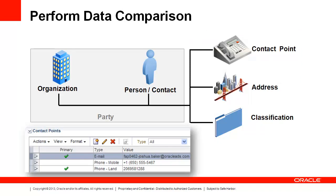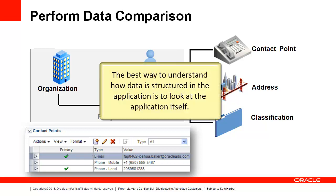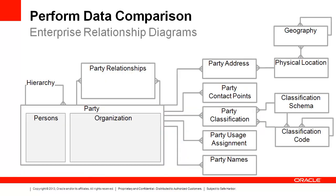For instance, there is no email field on the contact. Email is a contact point record that can be associated to multiple contact or customer records, so there is a one-to-many relationship there. The best way to understand how data is structured in the application is to look at the application itself. However, in some cases it may be helpful to look at an Enterprise Relationship Diagram, or ERD, to understand the data architecture.